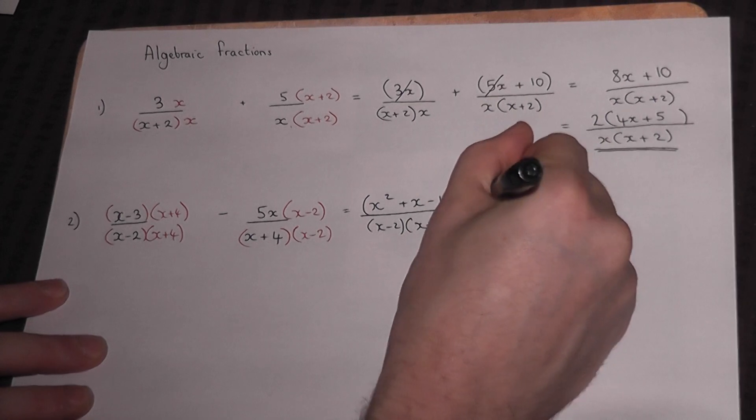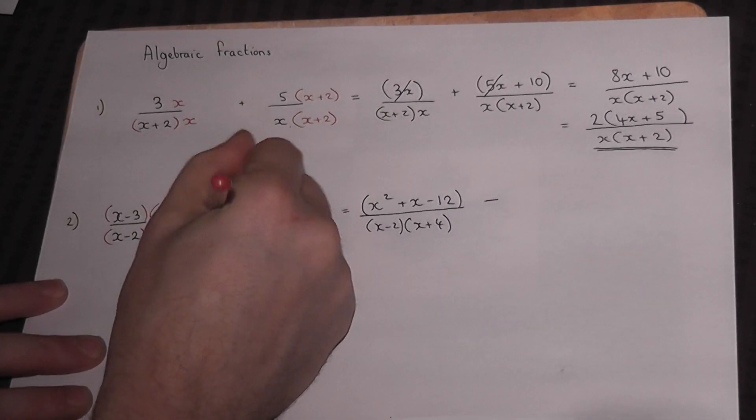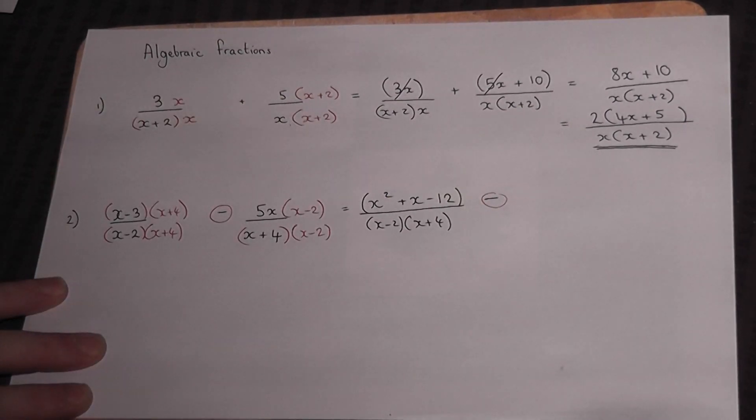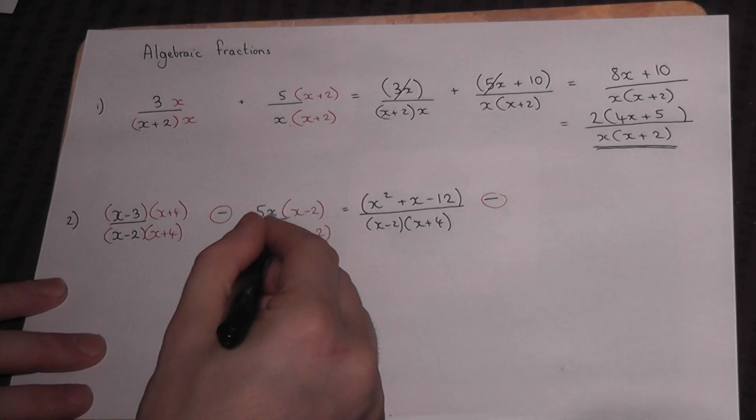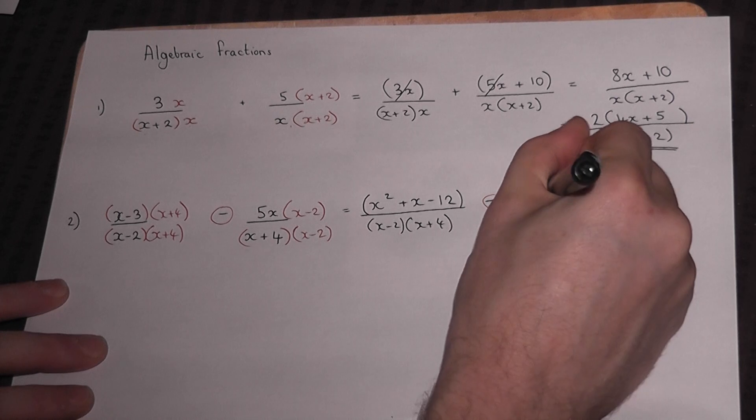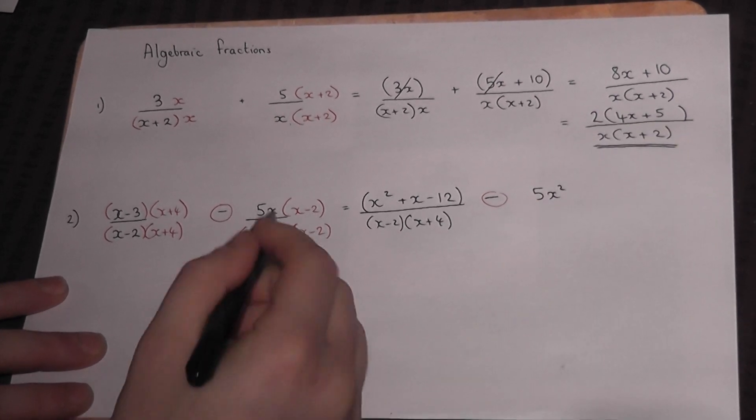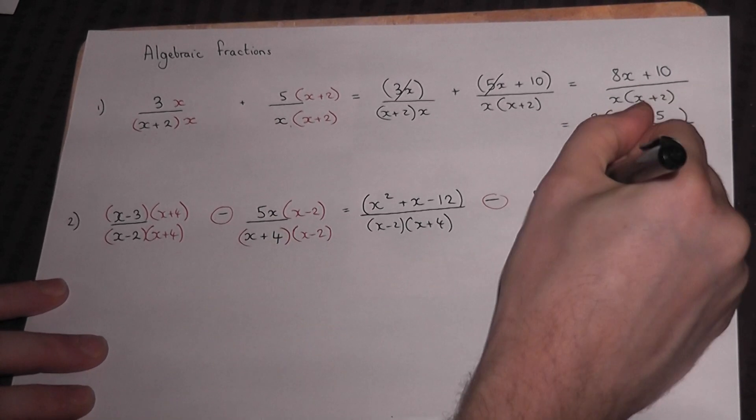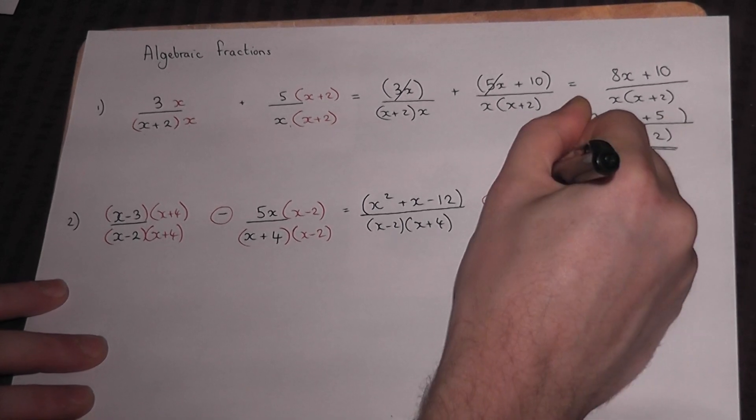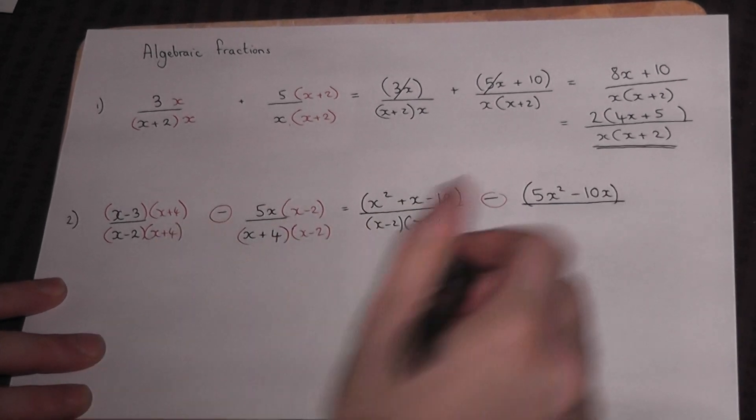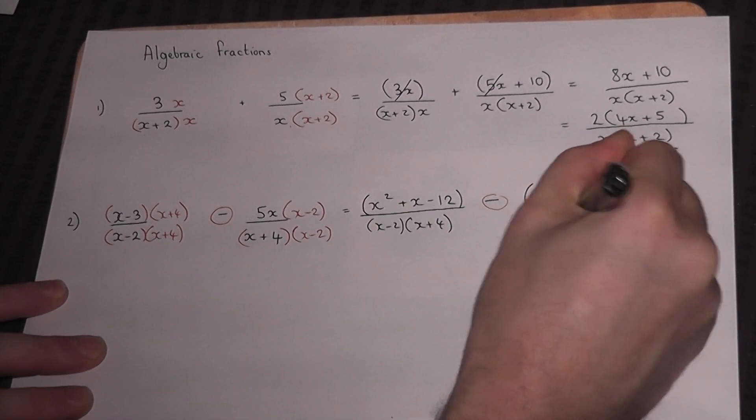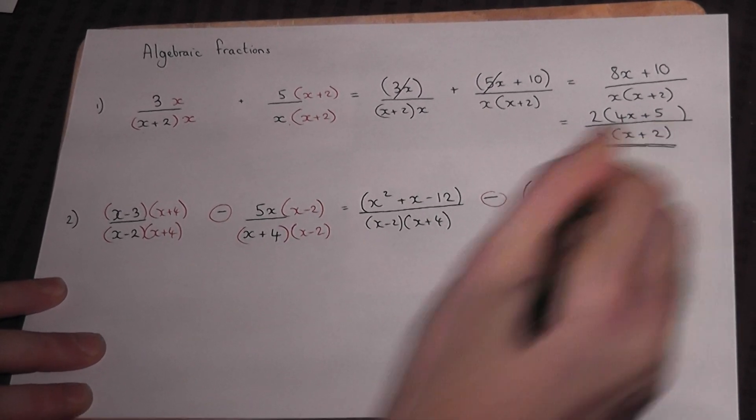We write down the minus (the subtraction in the question), then expand the other numerator. 5x times x is 5x², 5x times -2 is -10x. Place that in a bracket and write it all over (x+4)(x-2). These two fractions now share the same denominator, albeit swapped around.